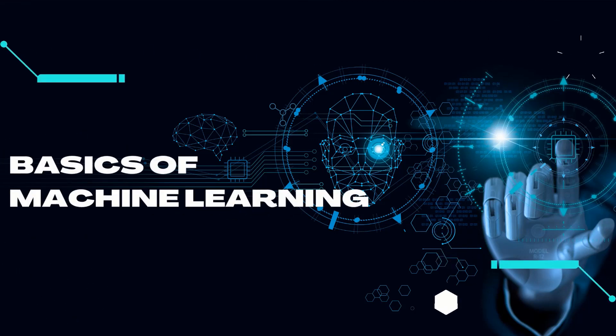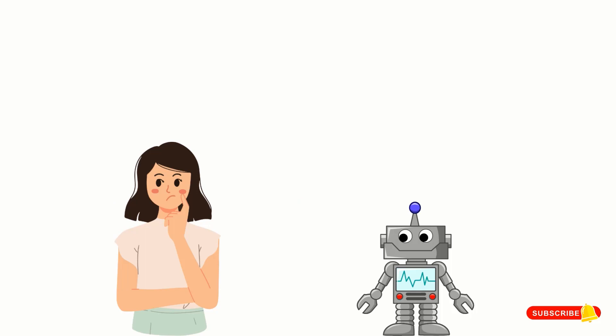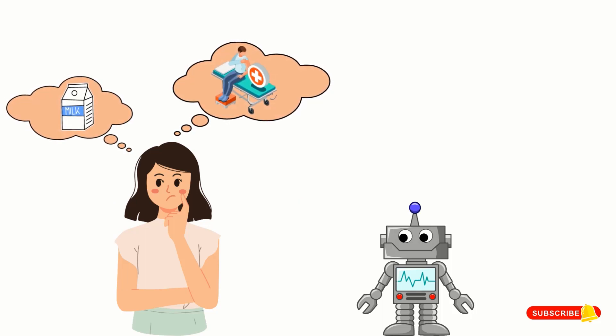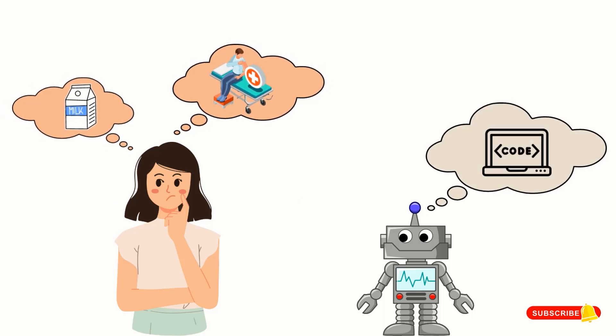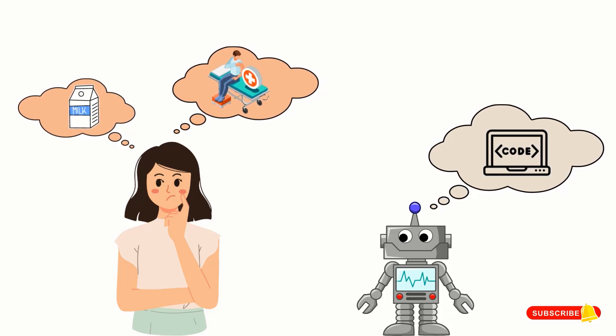One of the main differences between machines and humans is that humans are able to learn from their past experiences. Machines, on the other hand, need to be given specific instructions on what to do.